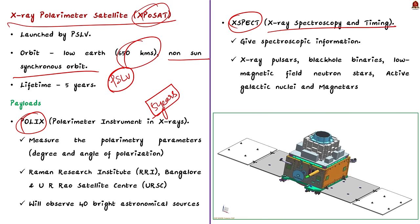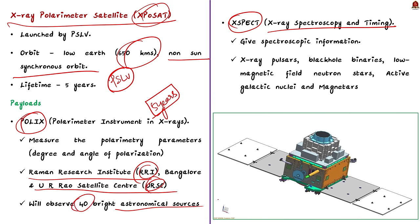The primary payload POLEX will measure polarimetry parameters in medium X-ray of astronomical origin. This payload is being developed by the Raman Research Institute (RRI) of Bangalore in collaboration with the UR Rao Satellite Centre (URSC). POLEX is expected to observe about 40 bright astronomical sources of different categories during the planned timeline of five years.